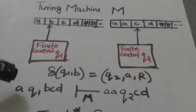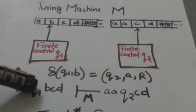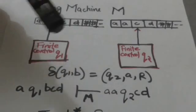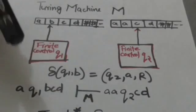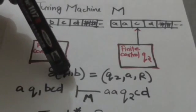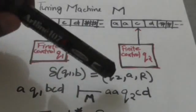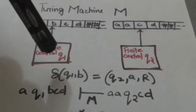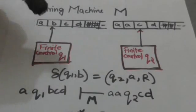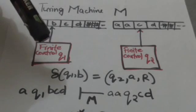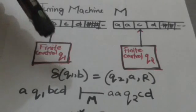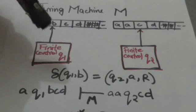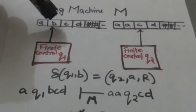Now suppose there is a transition in Turing machine M: if the Turing machine M is in state q1 and reads tape symbol B, then it will jump to state q2, replace the tape symbol B with tape symbol a, and move its head one position to the right. When the Turing machine M is in state q1 and the tape symbol under its read-write head is B, it will read B, replace it with tape symbol a, jump to state q2, and move the head one position to the right.